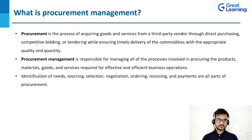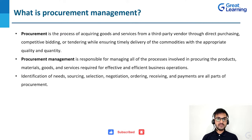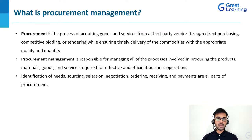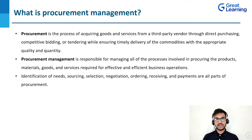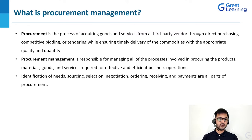How do you acquire those goods or services? Maybe you go for direct purchasing or maybe you go for competitive bidding, where multiple vendors or service providers are allowed to submit offers and they compete with each other, and eventually you select one. In procurement, timely delivery is also very important — you have to track the delivery of products or services, and you must not compromise on quality and quantity. Terms and conditions are set for that, and you check whether those standards are followed.